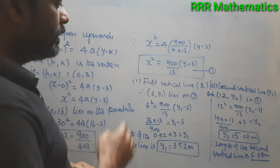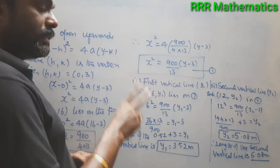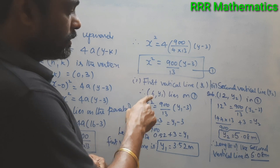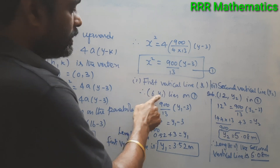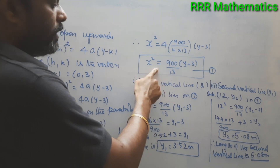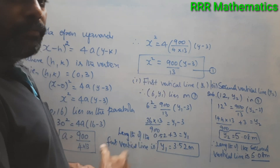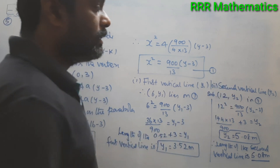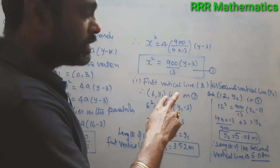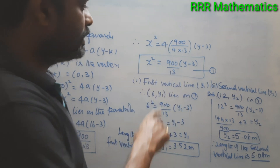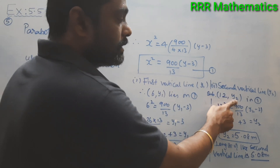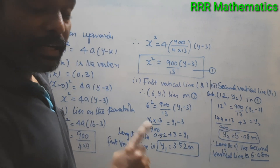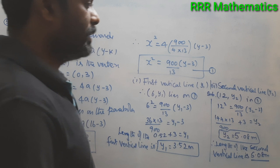The exact equation of the parabola is x² = (900/13)(y − 3). The first vertical cable is 6 meters from the vertex; substituting gives y₁ = 3.52 meters. The second vertical cable is 12 meters from the vertex; substituting gives y₂ = 5.08 meters. Therefore the length of the first vertical line is 3.52 meters and the second vertical line is 5.08 meters.